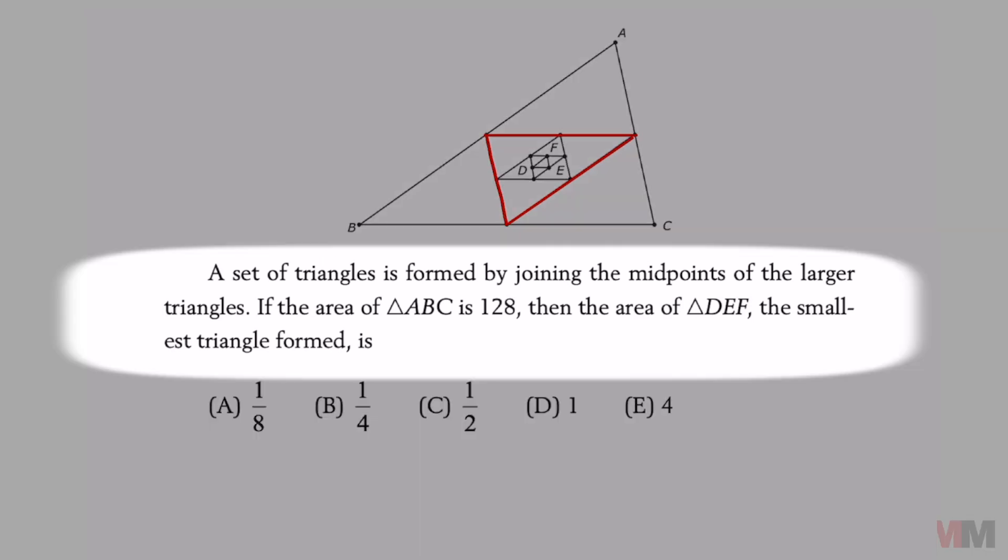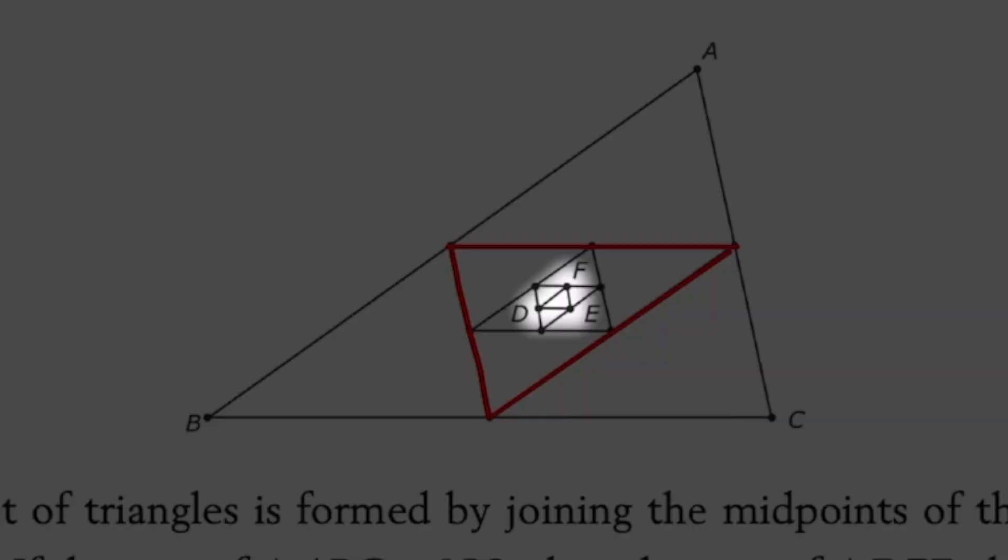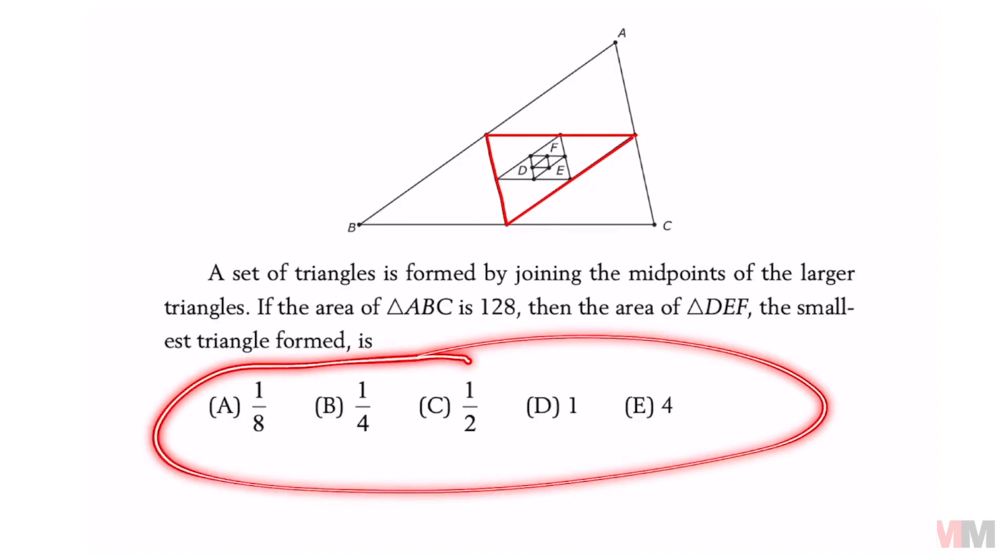A set of triangles is formed by joining the midpoints of the larger triangles. If the area of triangle ABC is 128, then the area of DEF, which is the tiniest triangle in this picture, is which of the following?